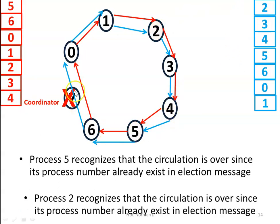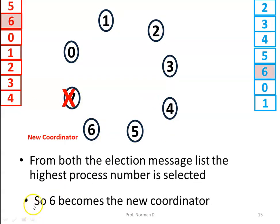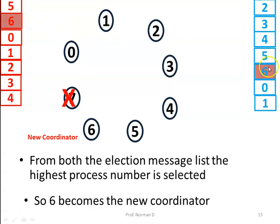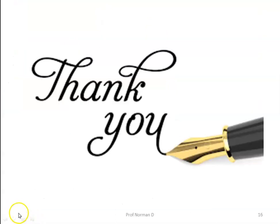Now the circulation of both election messages — the one generated by process 5 and the one generated by process 2 — is complete. From both messages, they determine which process has the highest process number. In both cases, process 6 is the highest, so process 6 becomes the new coordinator. This is how the ring algorithm works in selecting a new coordinator.